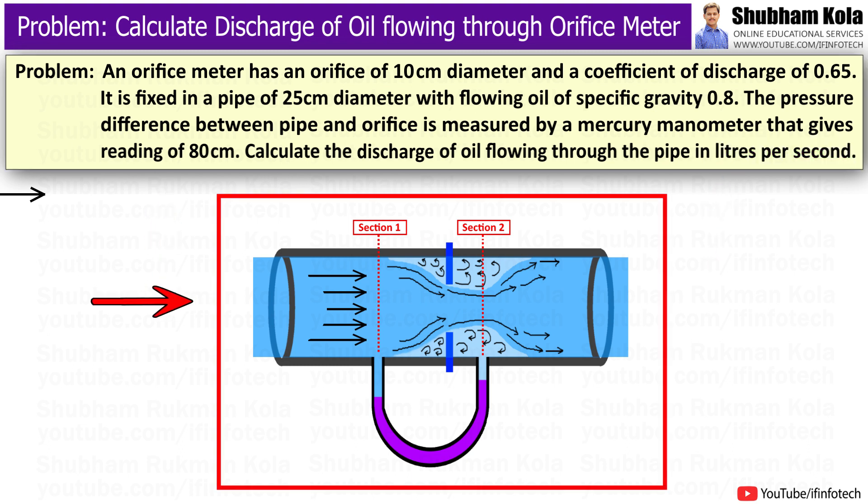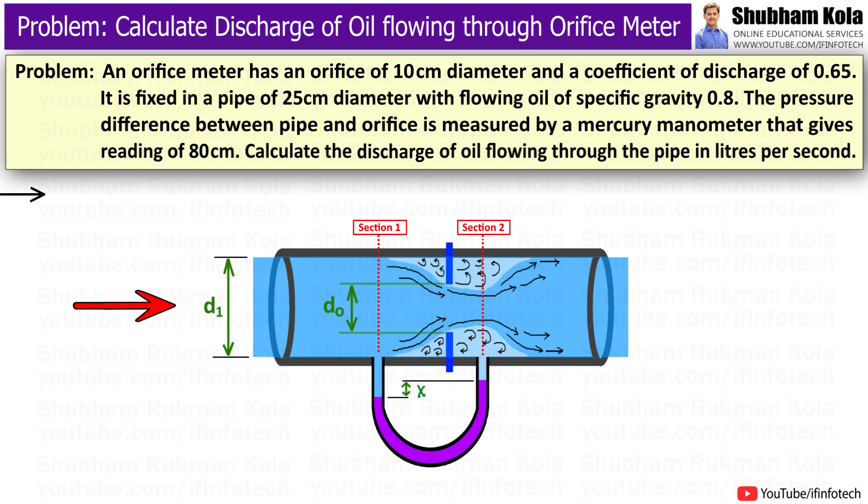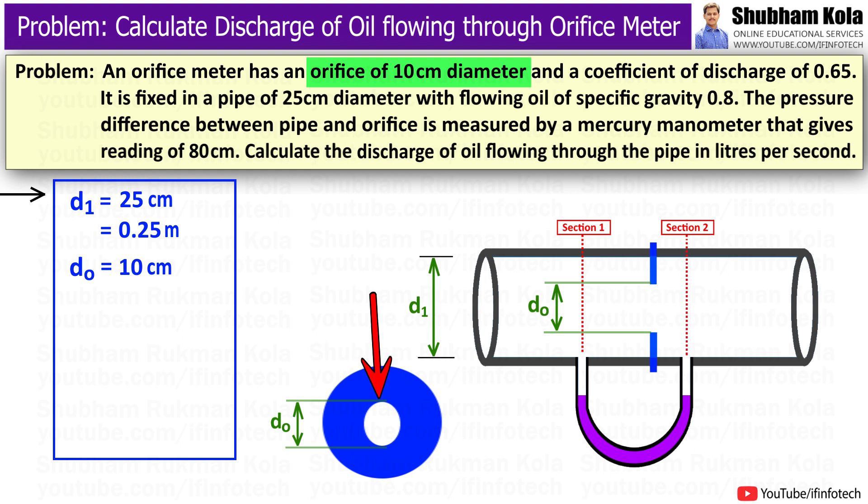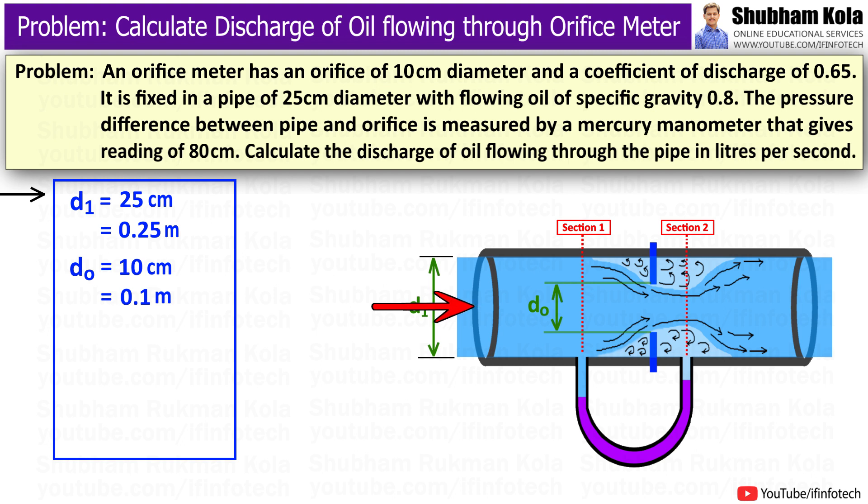To solve this problem, first I will draw the diagram of orifice meter and note down the given data. Let us consider this is the pipe whose diameter value is 25 cm, that is 0.25 meter, denoted as d1, in which the orifice plate is placed. The diameter value of orifice is 10 cm, that is 0.1 meter, denoted as dO. The oil is flowing from left to right.